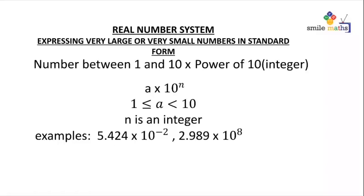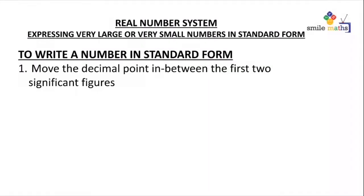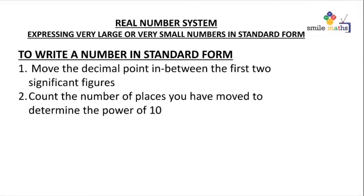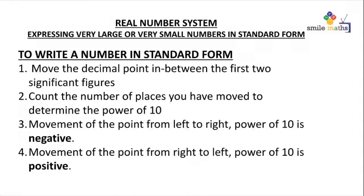You can see that negative 2, which is the power of 10, is also an integer. Another example is 2.989 × 10^8 — 2 is also within our interval, and 8 is also an integer. To write a number in standard form, you have to move the decimal point in between the first two significant figures. We assume you have watched a video on significant figures, so you understand. Count the number of places you have moved to determine the power of 10.